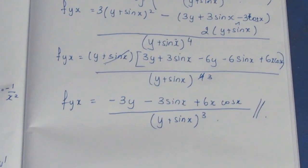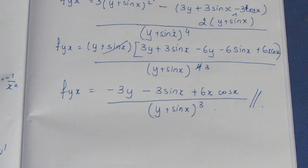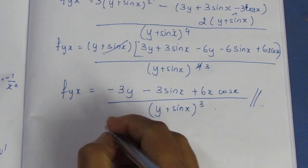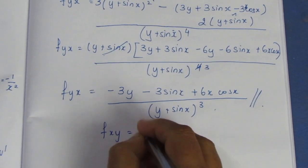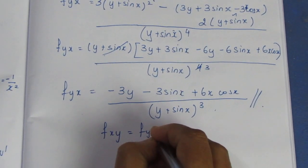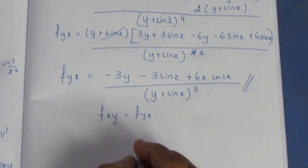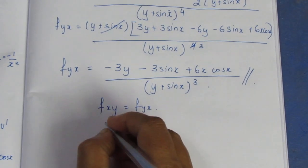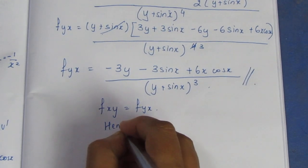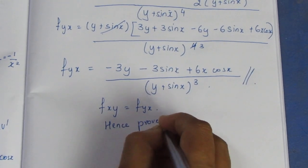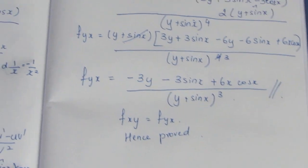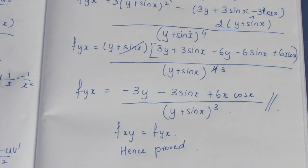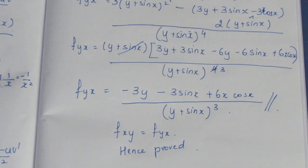This is the same as f of xy. So f of xy is equal to f of yx — hence proved. We have found f_x and f_y, and proved that f_xy equals f_yx. Thank you.